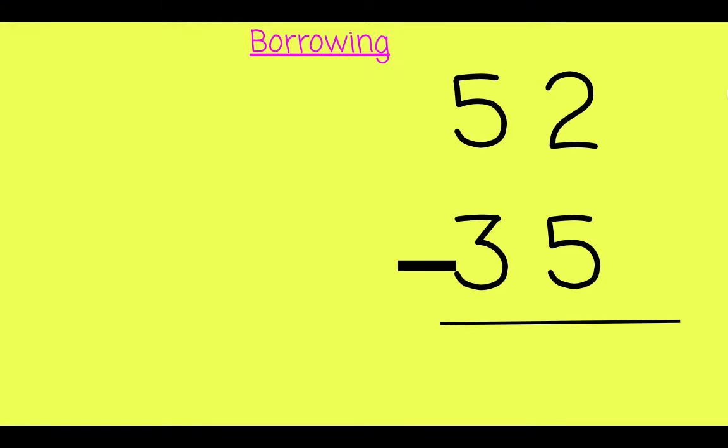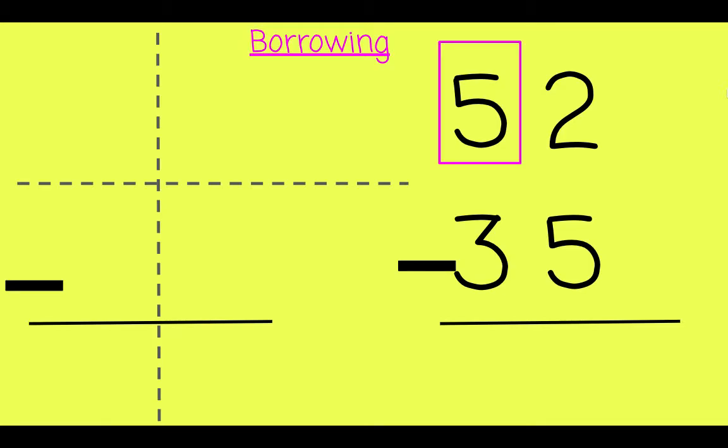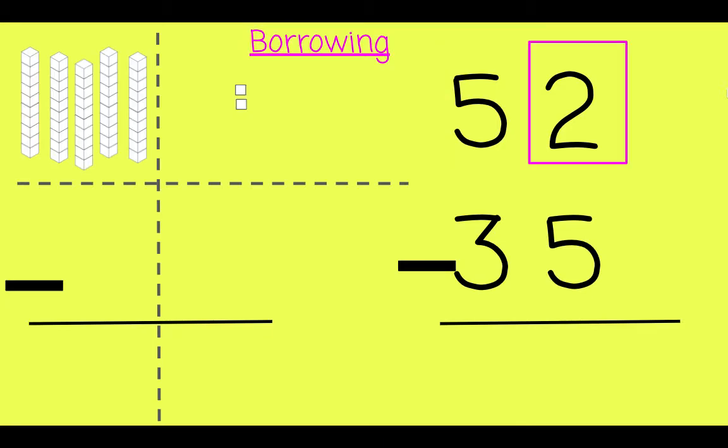Okay, let's talk borrowing. Here's a standard subtraction algorithm on the right. On the left, I'll represent it with base 10 blocks. This 5 represents 50 because it's in the 10s column, so it can also be thought of as 5 10s.